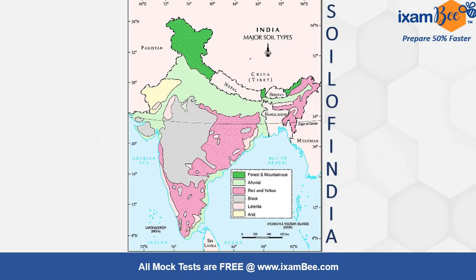Now let's study about their distribution. Forest and mountain soil can be seen in the upper hilly areas of Jammu and Kashmir, some regions of Sikkim, and the northeast Assam region. Alluvial soil starts from Punjab and extends east to the Assam region, with major areas covering Uttar Pradesh and Bihar.